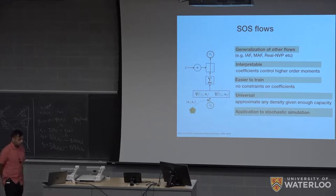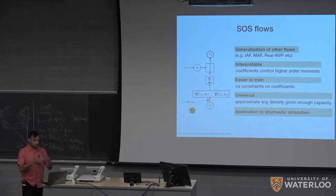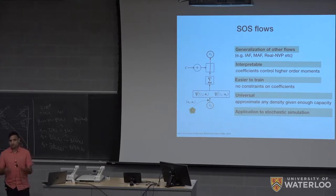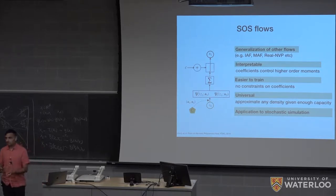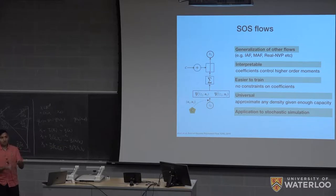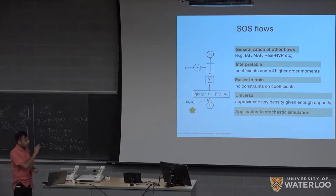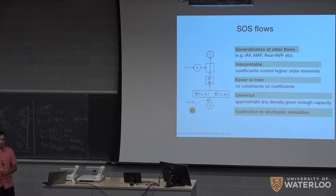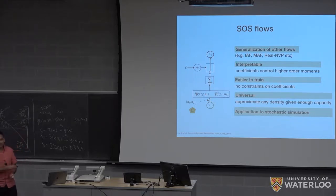To summarize the research landscape: building normalizing flows requires bijective, differentiable transformations whose inverse can be computed. The triangular transformation framework unifies this research. All methods I've introduced — AR flows, MAF, RealNVP, NAF, SOS flows — use triangular transformations. Most papers in this area, including Glow, can be cast as triangular transformations. The theorem guarantees triangular maps suffice for transforming any source to any target density.